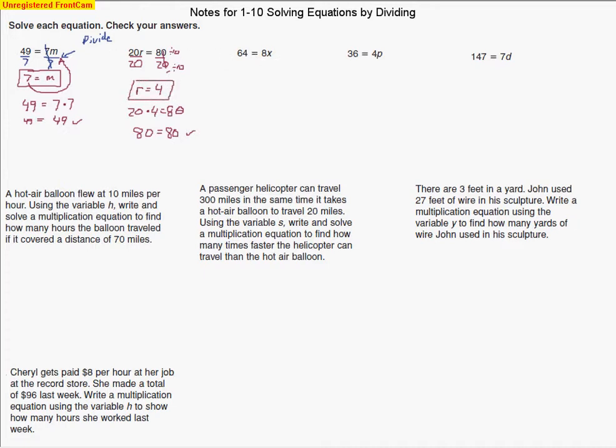The next problem here, well, we have to divide by 8 because what's happening is 8 is being multiplied by x. So dividing will undo that multiplication. 64 divided by 8 is 8, so x equals 8. Let's check our answer. 64 equals 8 times 8. Well, 8 times 8 is 64. So yes, the two numbers do agree. We know we did the problem correctly.